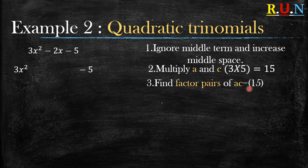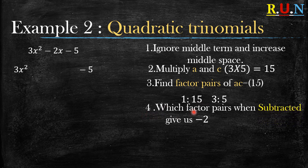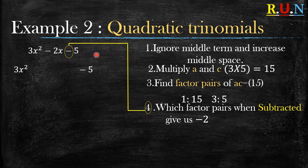Find the factor pairs of 15. Now, which factor pairs when subtracted give us negative 2? We bring in the negative sign here. We use subtraction because we have a negative sign in front of our c.